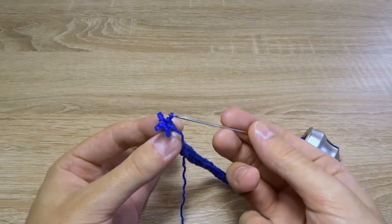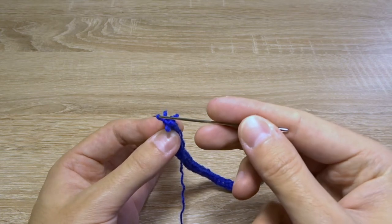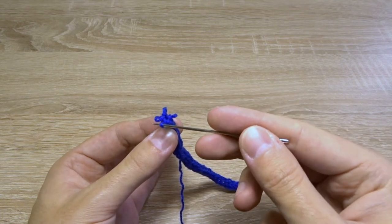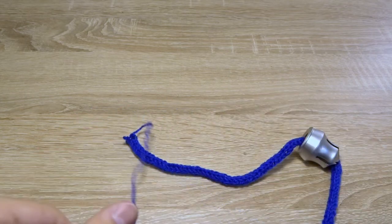When you take the cord from the machine you will have to sew up the open stitches. Now you can see them. You have to be careful because the cord will start to unravel if you pull the end of the yarn.